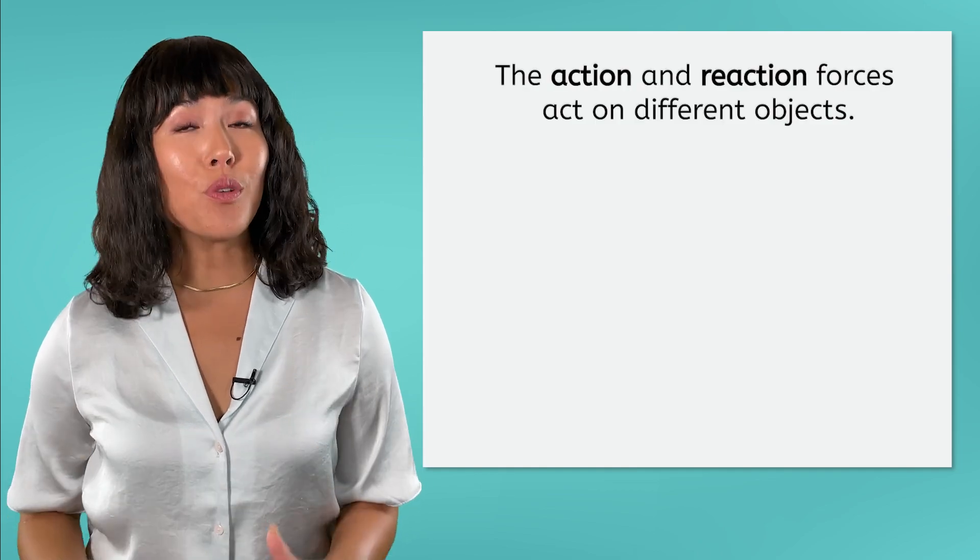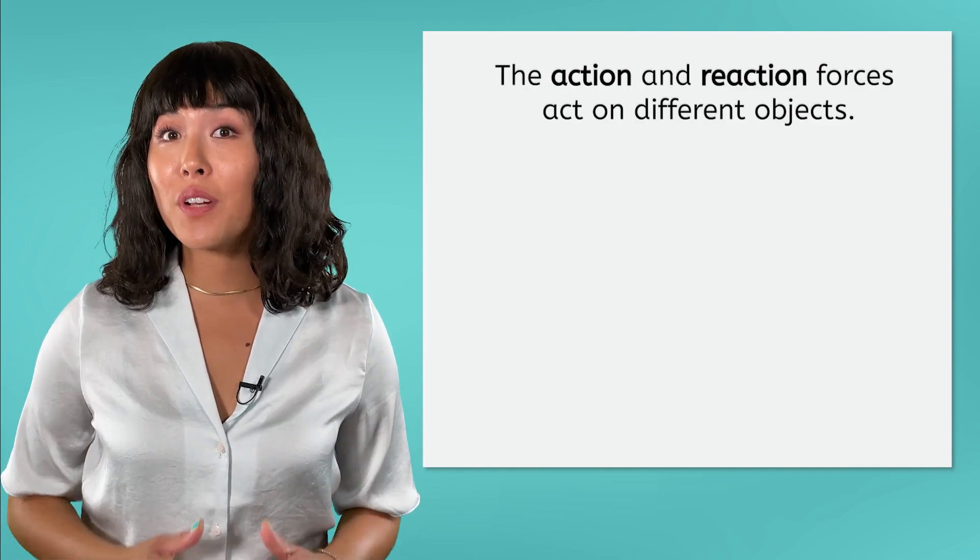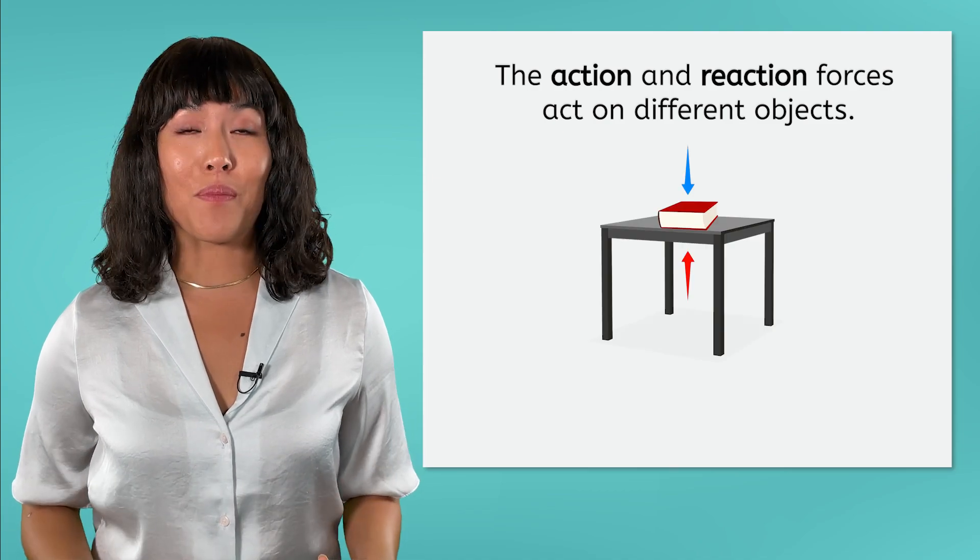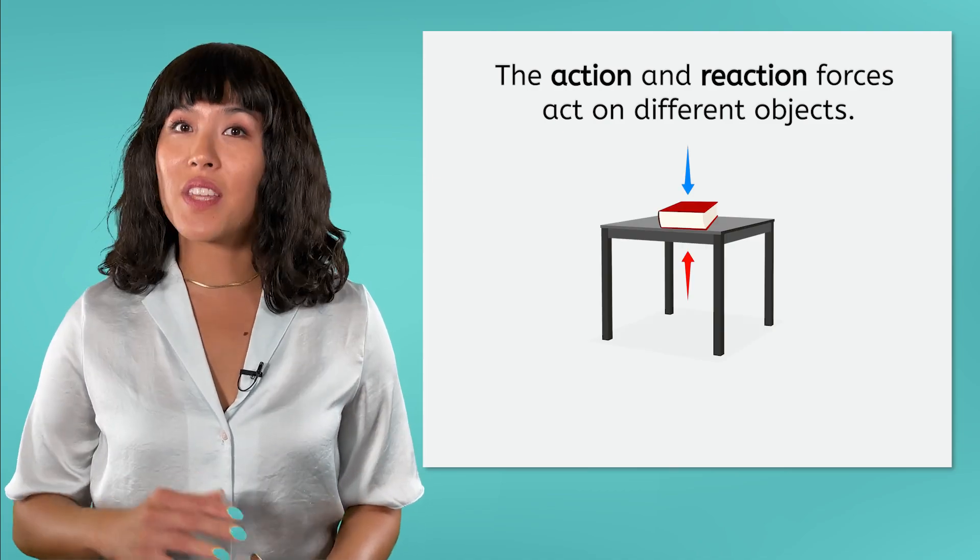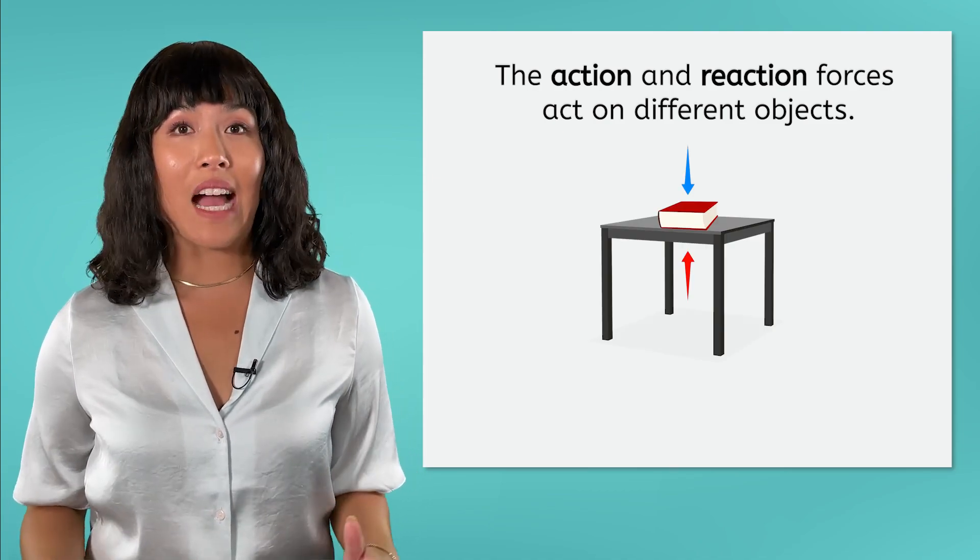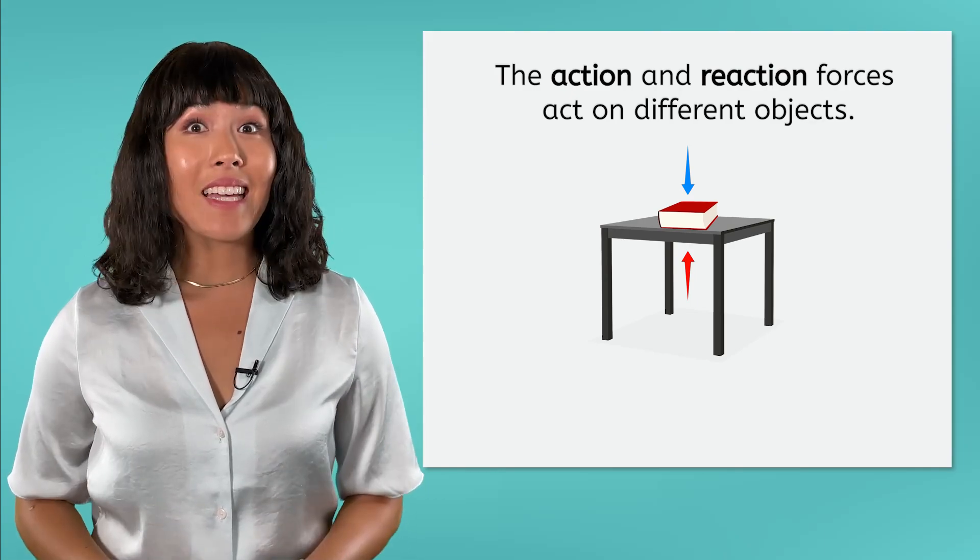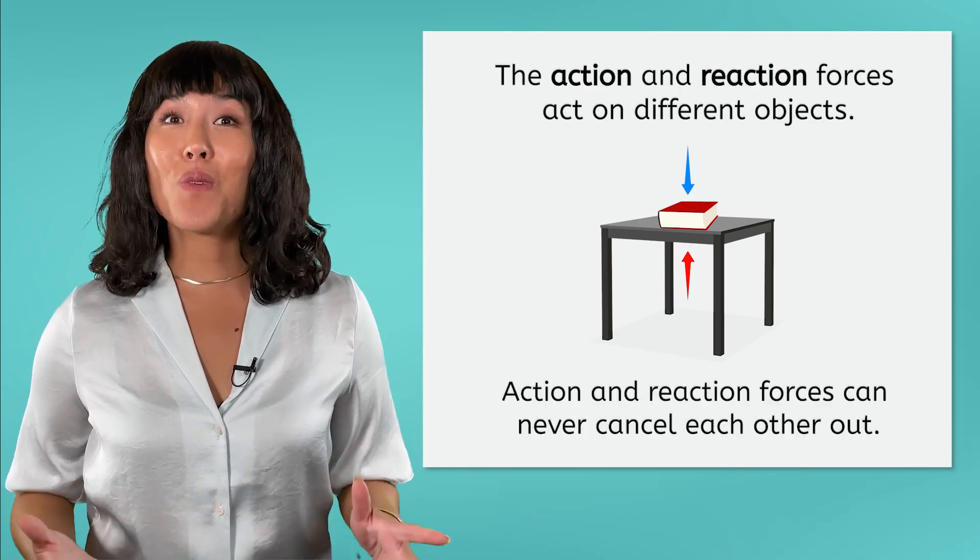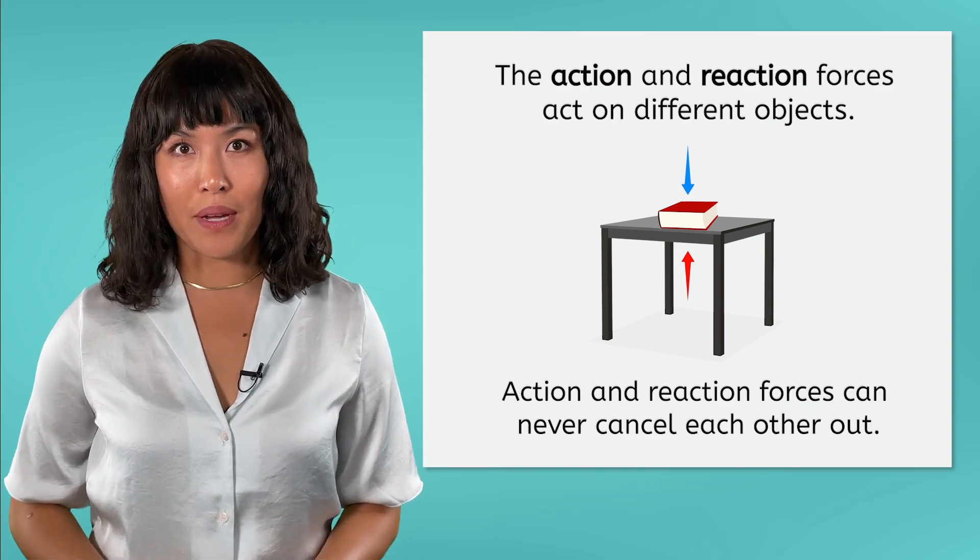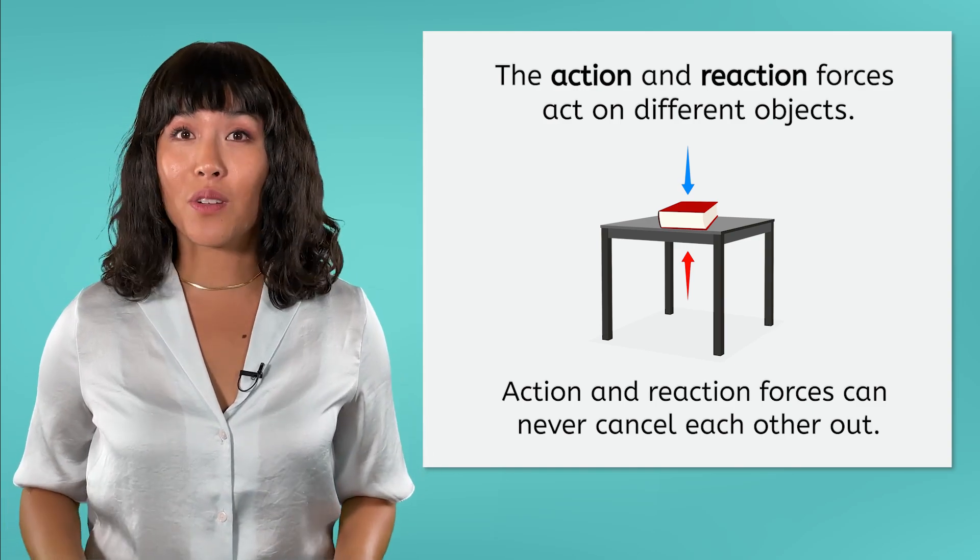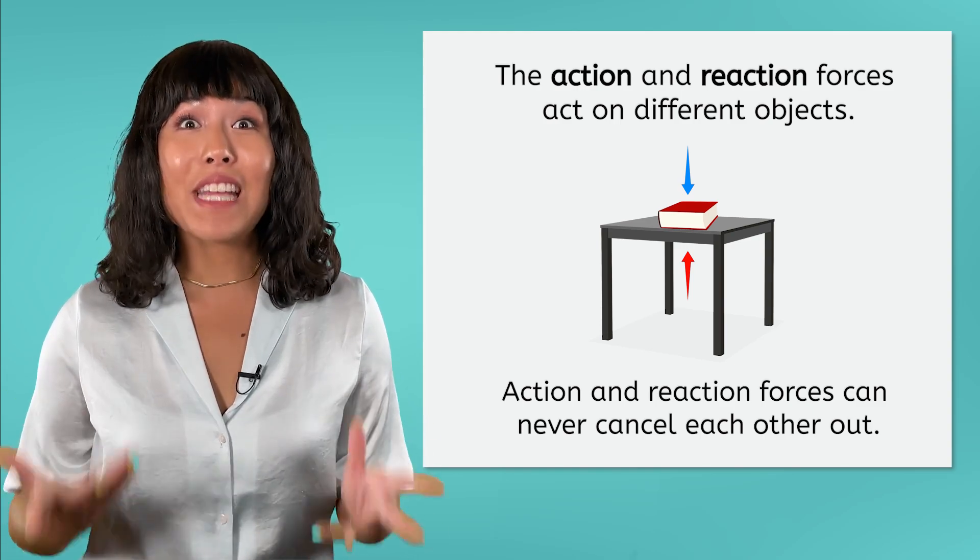One hint to keep in mind when finding action-reaction force pairs is that the two forces will act on different objects. In the last example, if one force acts on the table, the other force must act on something else. In this case, the book. This is why action and reaction force pairs can never cancel each other out. They act on different objects.